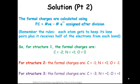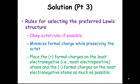And then finally, in structure three, the formal charges are carbon minus three, nitrogen plus one, oxygen plus one. Nothing really screams at us on which one is the best at this moment, but we're going to learn how to figure out which one it would be. For selecting the preferred Lewis structure, the first thing we want to do is obey the octet rule if at all possible.